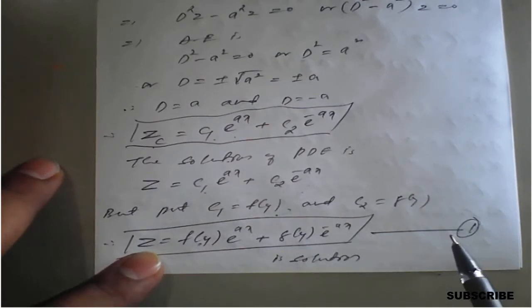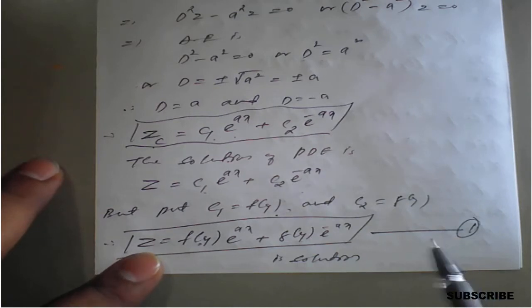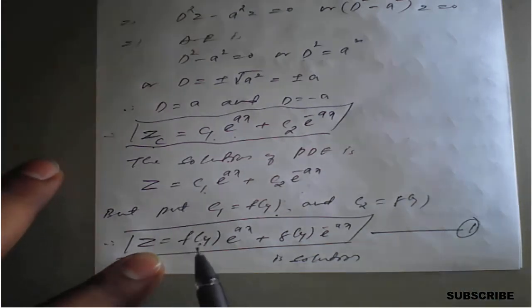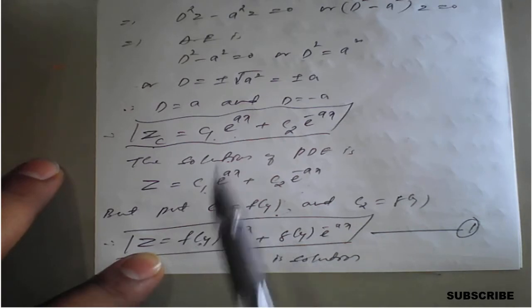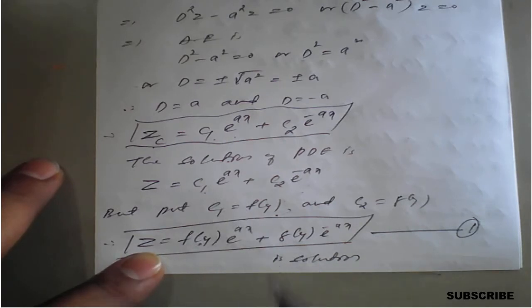So in place of c₁ write f(y), and in place of c₂ write g(y). Call this equation number one. By using the given conditions, we will find the values of f(y) and g(y) and replace them to get the required solution.